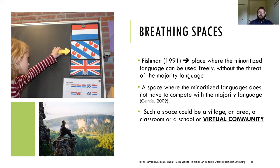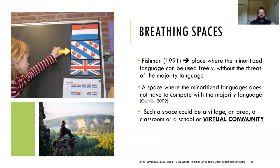One way to avoid this is to first establish places where the language can be used freely — and that is the idea of breathing spaces. Fishman already talked about this in 1991: a breathing space being a place where the minoritized language can be used freely and without the threat of the majority language. Scholars working on translanguaging have retaken this idea, suggesting that for translanguaging practices to be sustainable in contexts with a minoritized variety, there has to be a breathing space — a place where this minoritized variety doesn't have to compete with the majority language. Such a space can be a village or an area in the more traditional sense, but it can also be a virtual community.